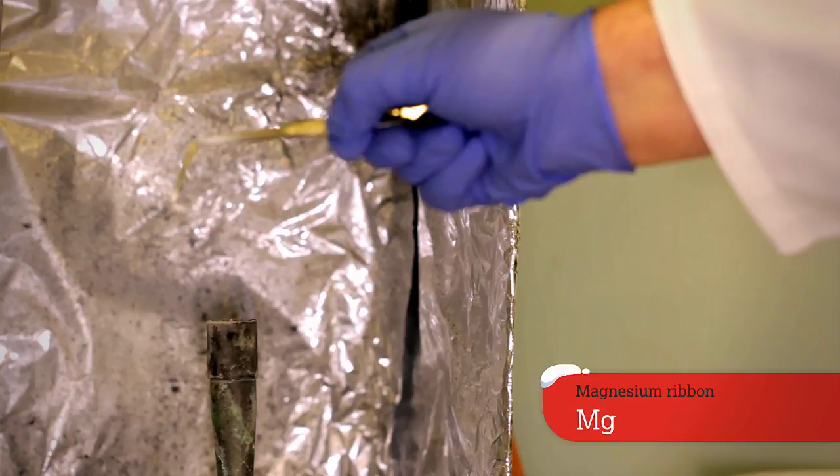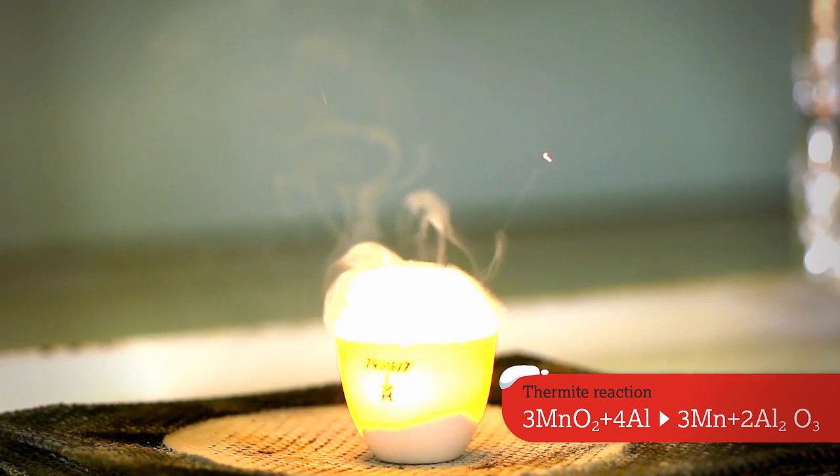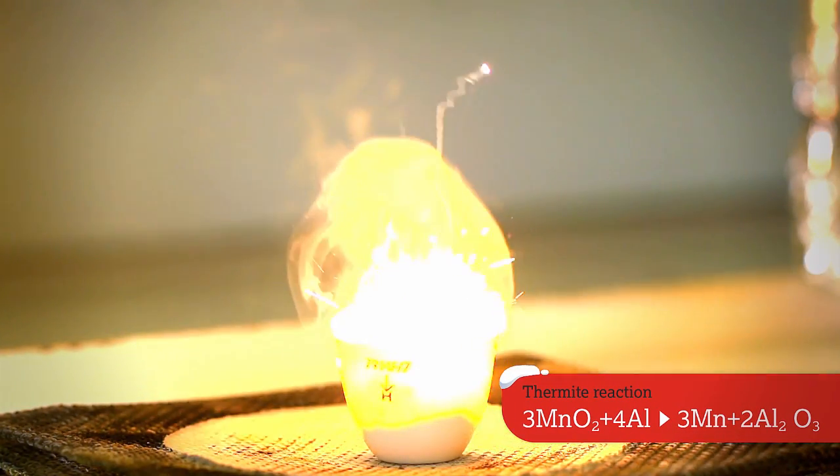And we've got an experiment which is known as the thermite experiment or thermite reaction. And that's been used historically to weld railway lines. We're going to show you a very small amount of that because it's an incredibly vigorous reaction.